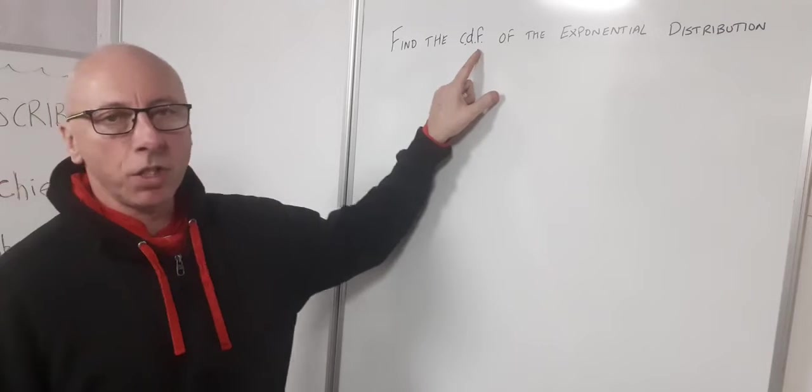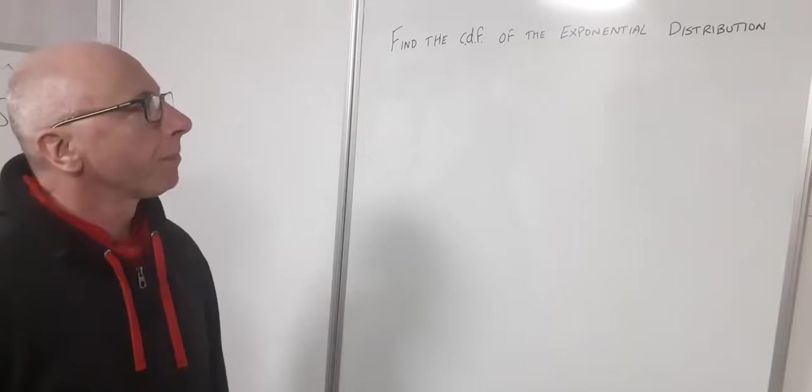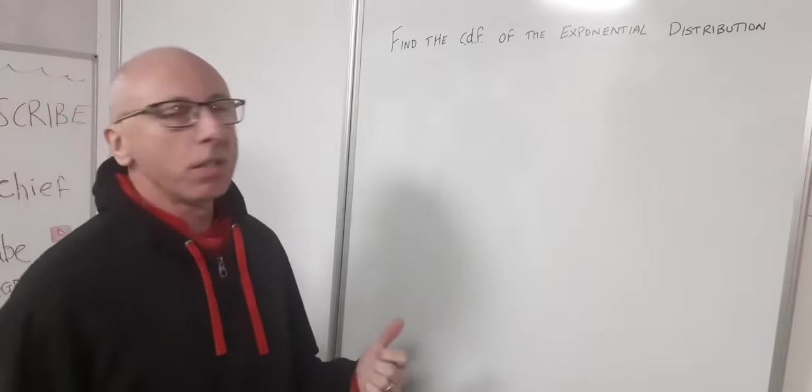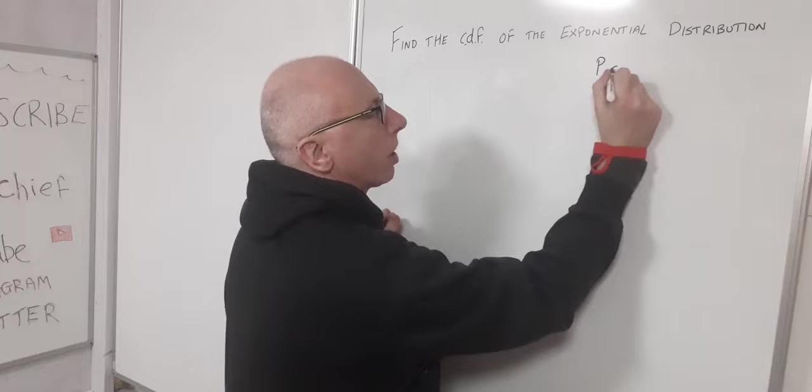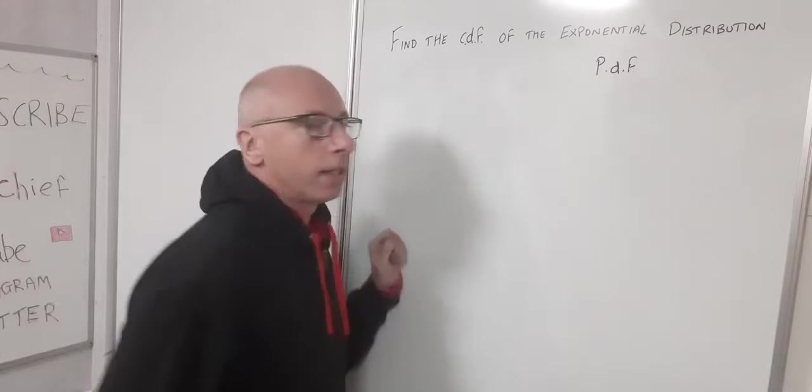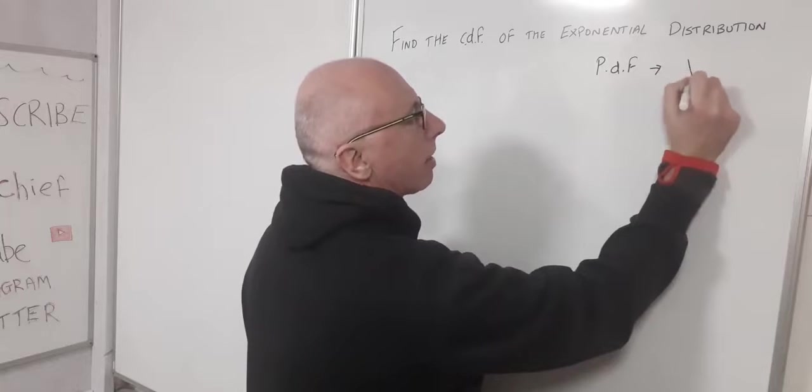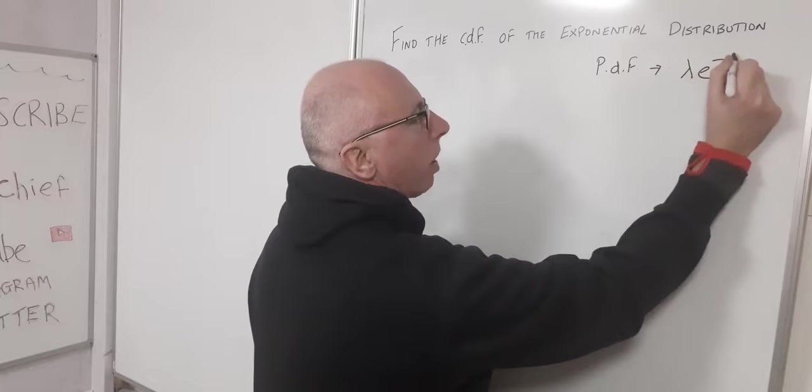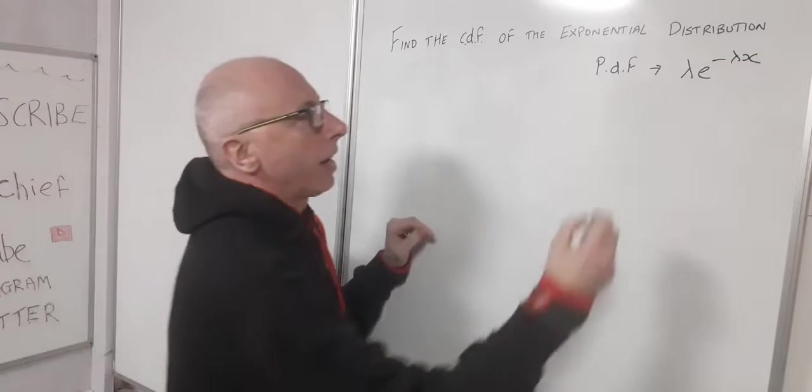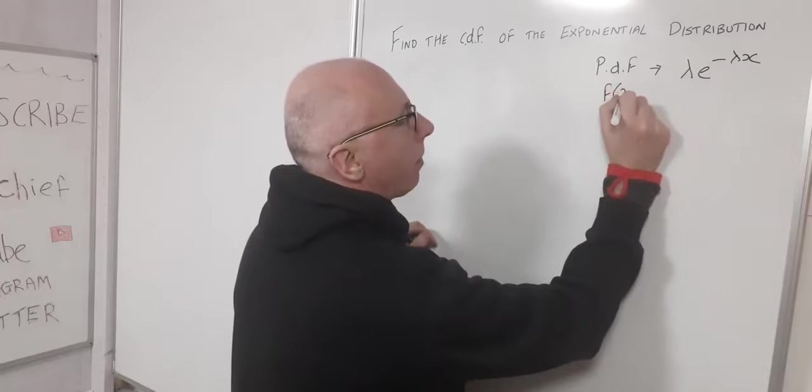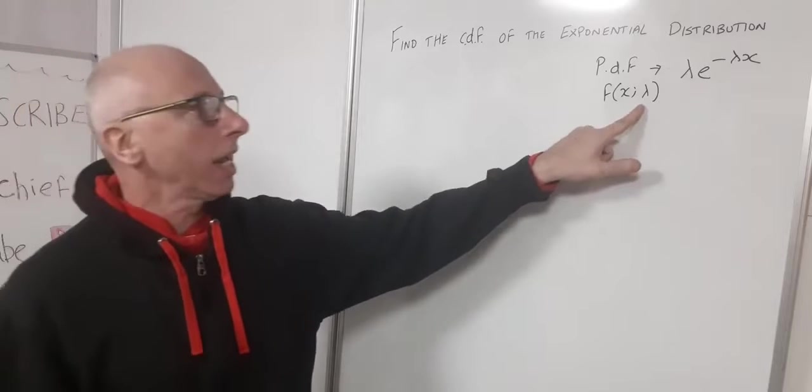So here we're going to find the cumulative distribution function of the exponential distribution. Now the way to find that is to first of all use the PDF, the probability density function. Now the probability density function of the exponential distribution is lambda e to the negative lambda x. That's our PDF, which is given as f of x given lambda. So that's the parameter of the exponential distribution.